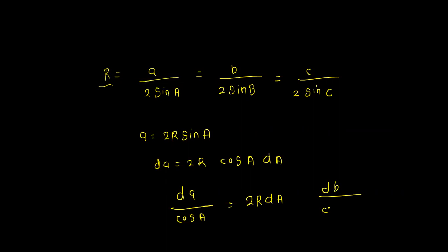Similarly, db by cos B is equal to 2R dB.